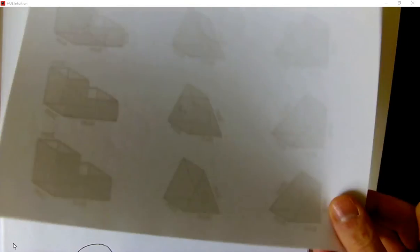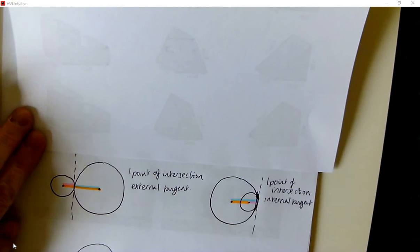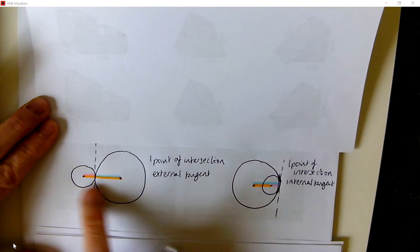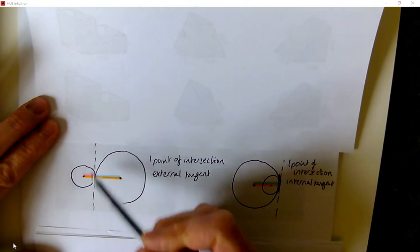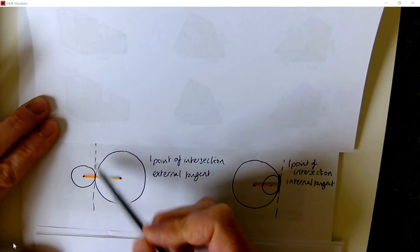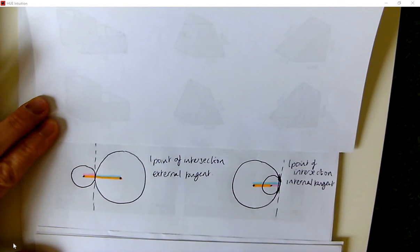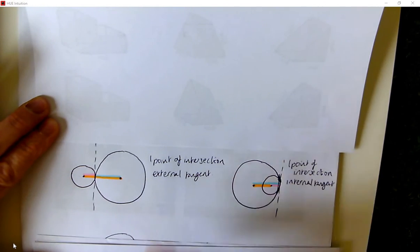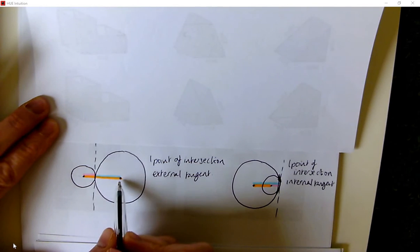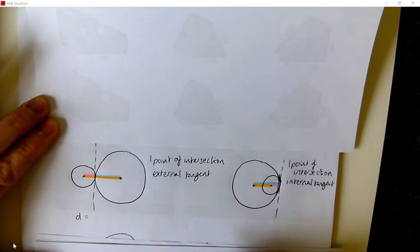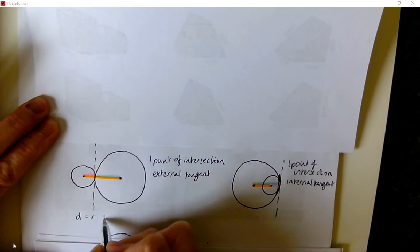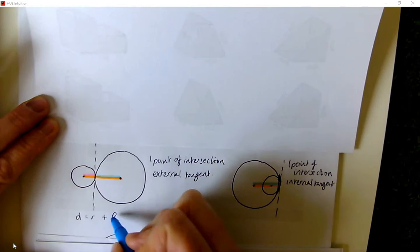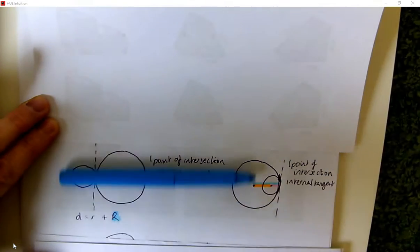Let's start by looking at when we have one point of intersection. First, where the circles are outside of each other — so we have an external tangent. You may remember that will be perpendicular to the line joining the two centres and the radii. Here you can see that the distance between the circle centres is exactly equal to the little radius plus the big radius.